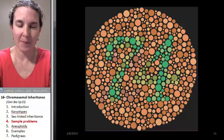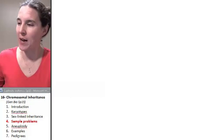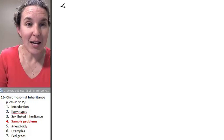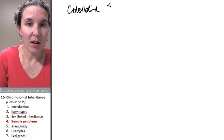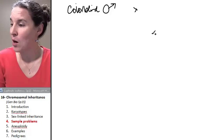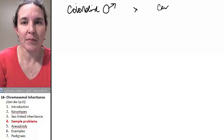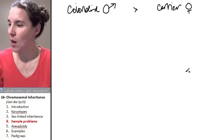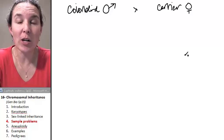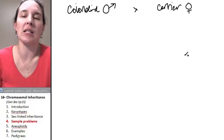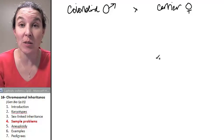The plot thickens. All right. Here's your problem. If a colorblind man makes a baby with a carrier woman, what is the phenotypic ratio of their possible babies? Like what are all the possibilities for babies that they can make? And what is the phenotypic ratio for that?